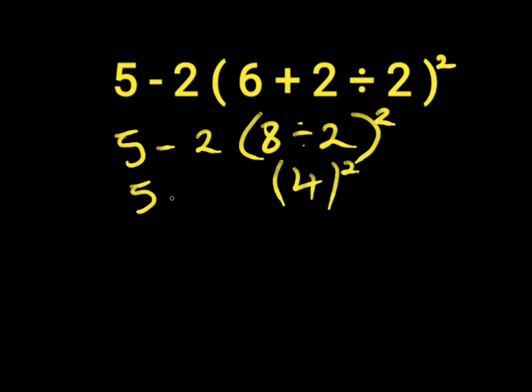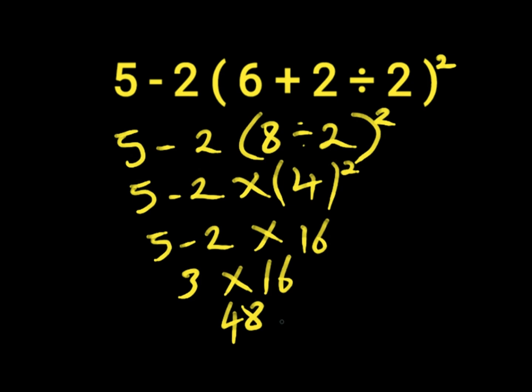Then we'll break down our 5 minus 2 times 4 exponent. So 4 exponent is 4 times 4. 4 times 4 will give us 16. Then we have 5 minus 2 times 16. 5 minus 2 is 3, and 3 times 16 is 48. So 48 is the wrong answer to this expression,